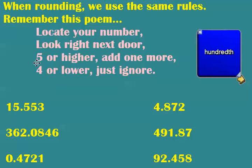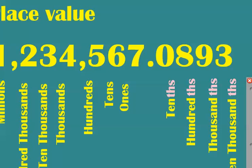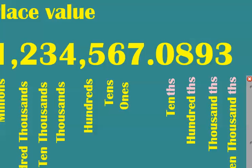That poem tells us to identify where our number is located, which makes it so important that we really remember our place values. For fifth grade, we only go to the thousandths — we do not go to ten-thousandths, so don't worry about that.